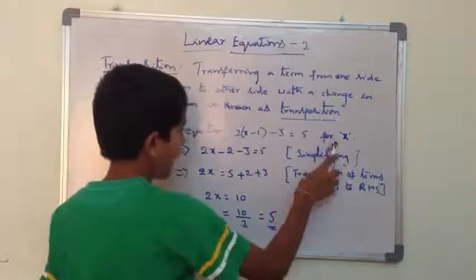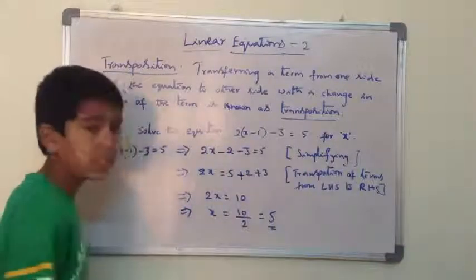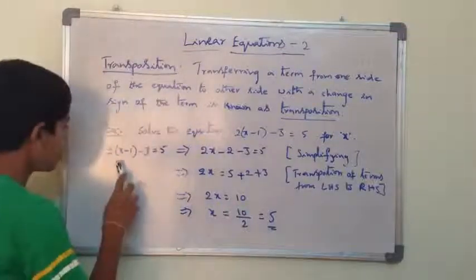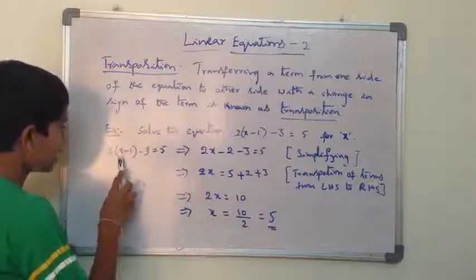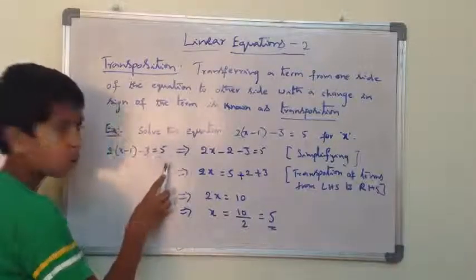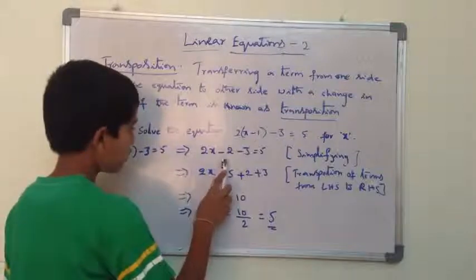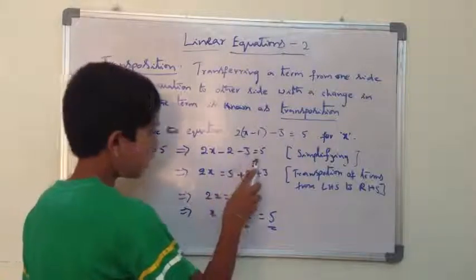Now, let us try finding the value of x in this equation by using Transposition. 2(x-1)-3=5 implies 2x-2-3=5.